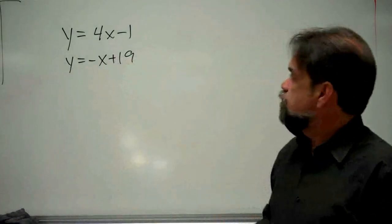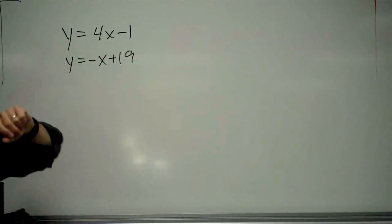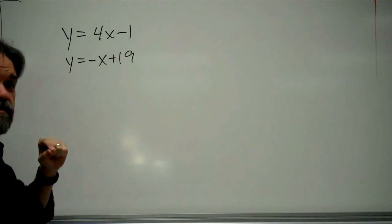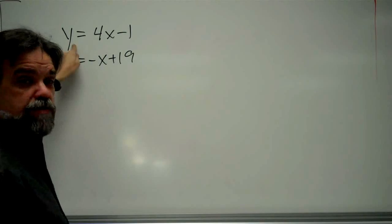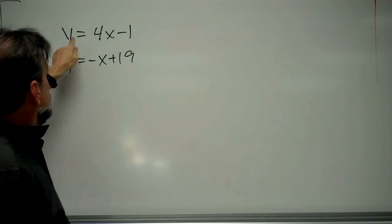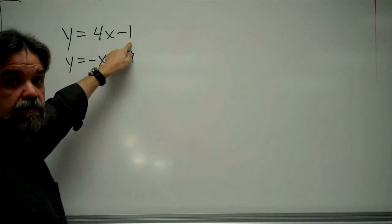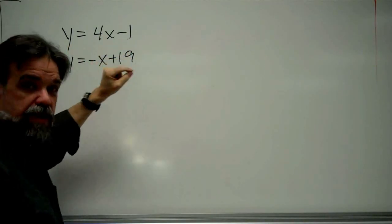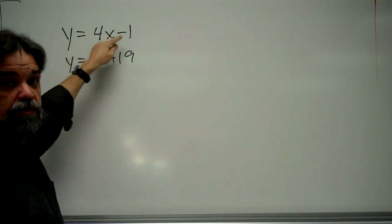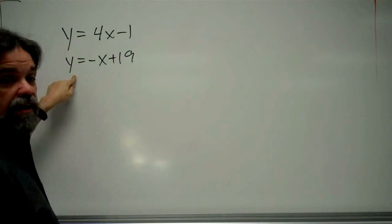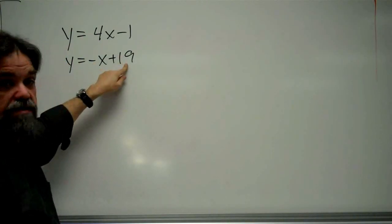So what do we do? Well, here we have two lines. Let's remember exactly what the equation of lines means. This line, every point on the line, the y-coordinate is 4 times the x-coordinate minus 1. That's what that equation means. It means that for every single point on that line, the y-coordinate of that point is 4 times the x-coordinate minus 1. And for every single point on this line, the y-coordinate is negative x-coordinate plus 19.